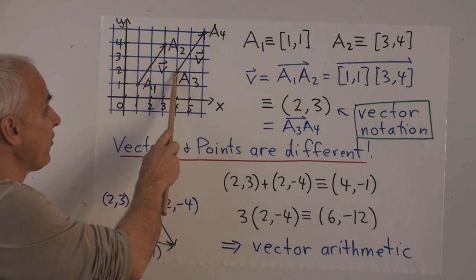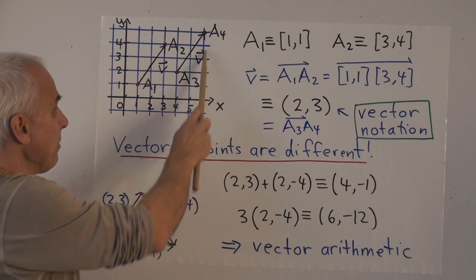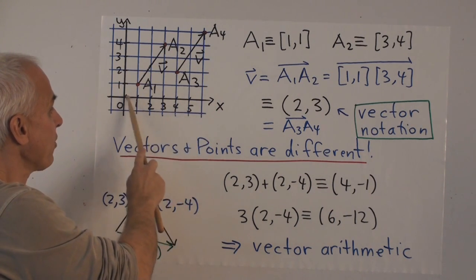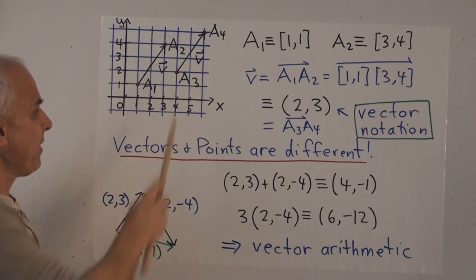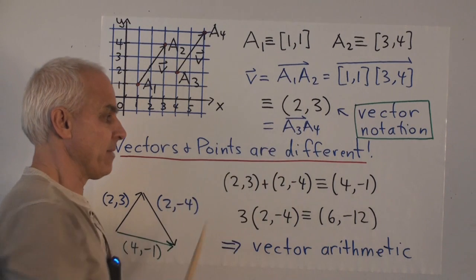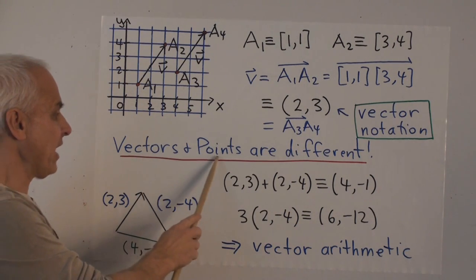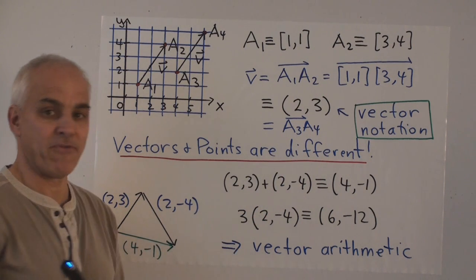Here's another example of the same vector. The point a3 with coordinates 4,2. The point a4 with coordinates 6,5. Then the vector associated to them is also 2,3. So again, we emphasize that vectors and points are different type of objects.